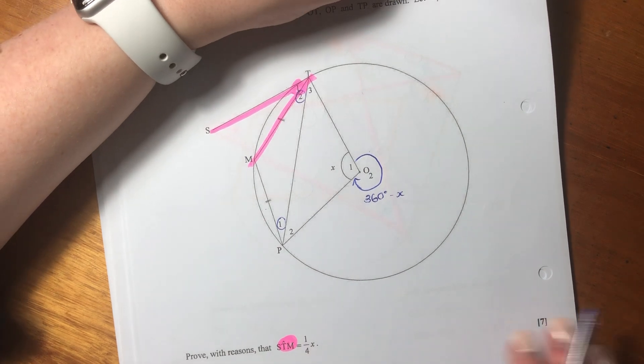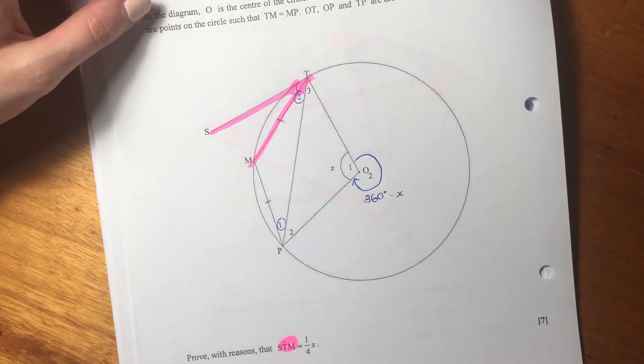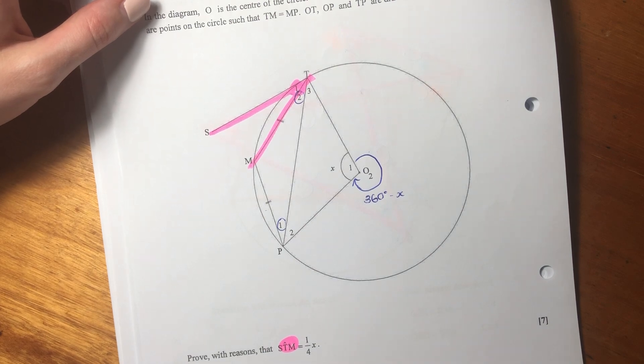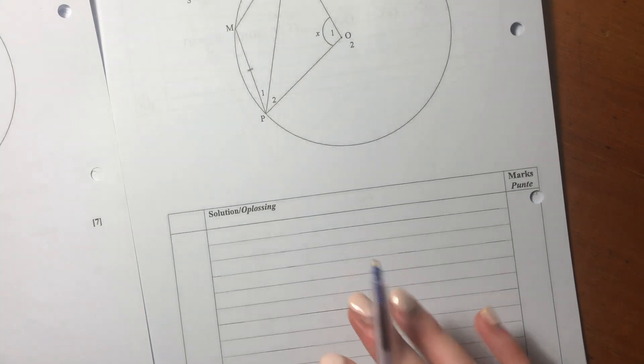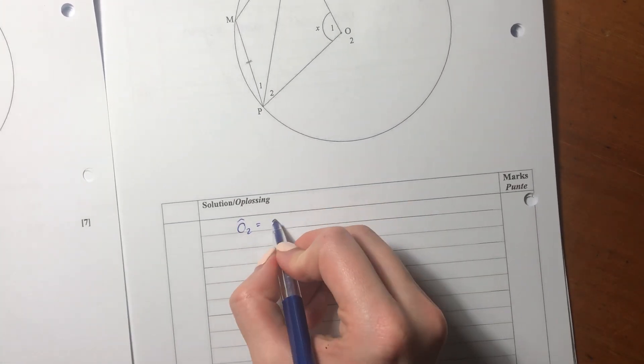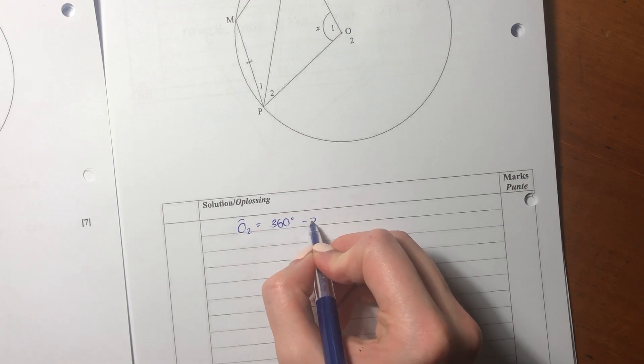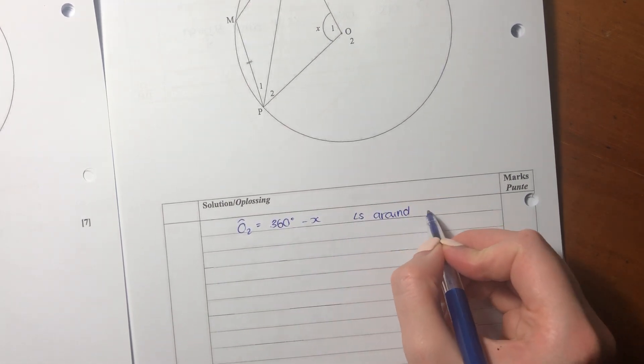Even if you start and you get lost, it's better to write it down because it helps you with a bit of logic. We're going to say O2 equals 360 minus X, and we say angles around a point.